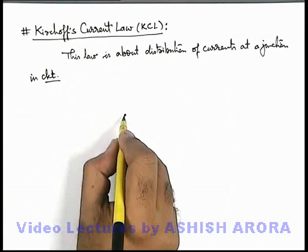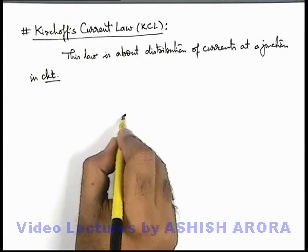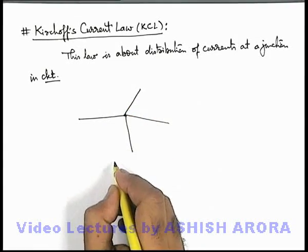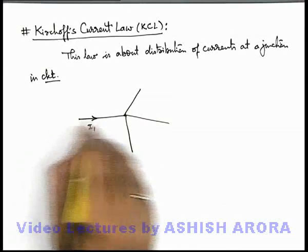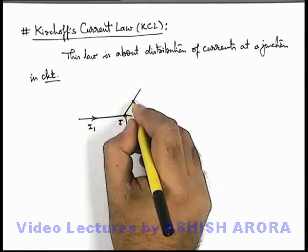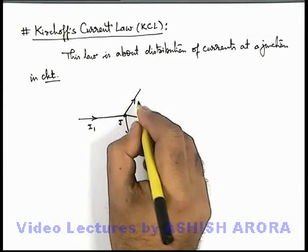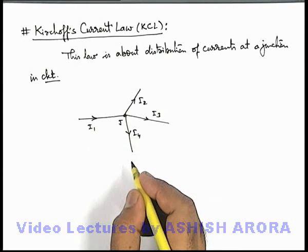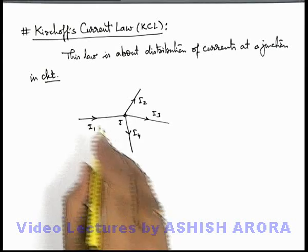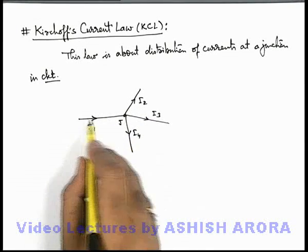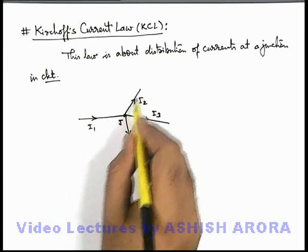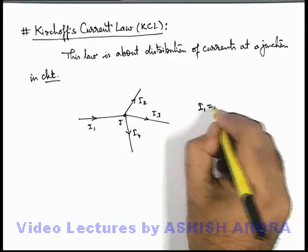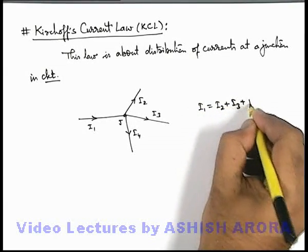Say there is a junction, and at one side there is a wire which is connected to 3 other wires. A current i1 is coming onto the junction J. From this point the current is divided in 3 wires as i2, i3, and i4. As the total charge of the system is conserved, i1 is divided among the 3 wires, so by conservation of charge: i1 = i2 + i3 + i4.